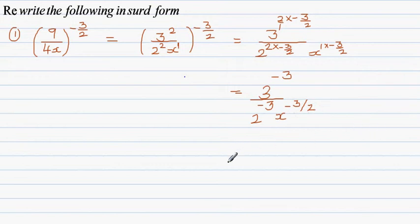Now apply the rule of negative indices. If you have a negative index in the numerator, it goes to the denominator, and if you have a negative index in the denominator, it goes up. Basically it flips or swaps.